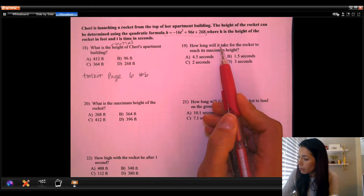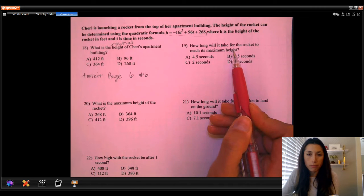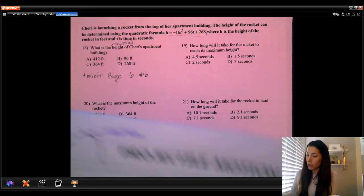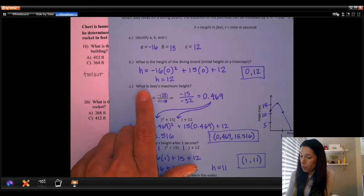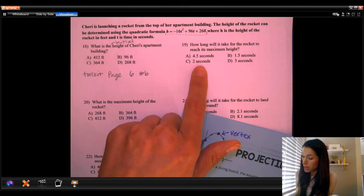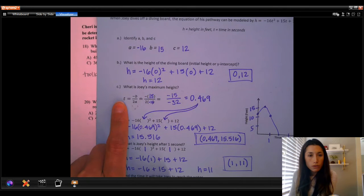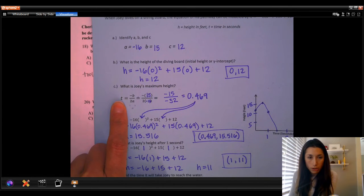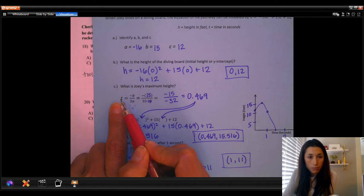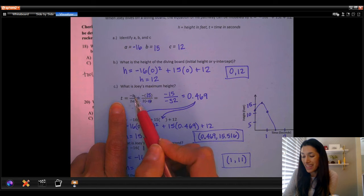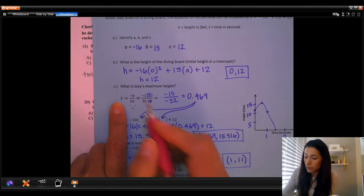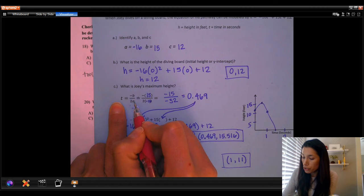Now the next question, how long will it take for the rocket to reach its maximum height? That would be question C. Question C was, what is the maximum height? And this is actually asking us to figure out how much time. If you notice in this question, on question C in our toolkit on this page, we figure out time by figuring out the axis of symmetry, essentially. The equation for the axis of symmetry. So we want to do negative B over 2A,